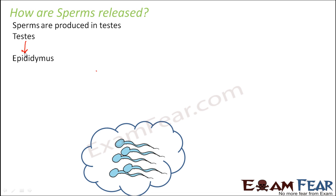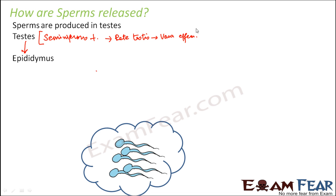From the testis — from the seminiferous tubules — they will first move into the rete testis. From rete testis they will move to vasa efferentia, and from vasa efferentia they will move into the epididymis. All three — seminiferous tubules, rete testis, and vasa efferentia — are part of the testis.